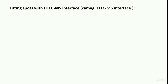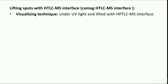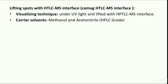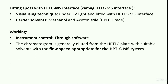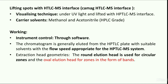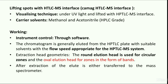Spots can be marked after visualizing under UV light and lifted with the HPTLC-mass interface. Solvents such as methanol and acetonitrile can be used for elution. Sample is applied on HPTLC plates and separated using suitable solvents. The developed chromatogram is generally eluted from the HPTLC plate with suitable solvents at a flow speed appropriate for the HPTLC-mass system. Additional extraction head geometries are available: the round elution head is used for circular zones, and the oval elution head for zones in the form of bands.